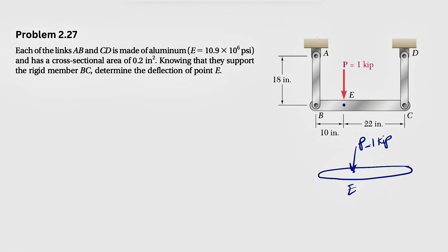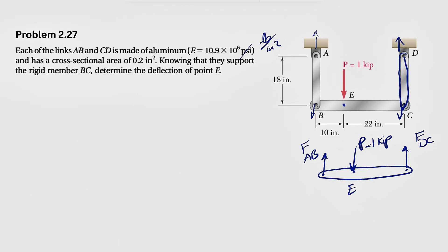We're going to start with the free body diagram of member BC. We have force P applied at point E, which is one kip. The two members AB and CD will be in tension. Therefore, the force from the members at joints B and C will be upward — we call them F_AB and F_DC. The elastic modulus is given in psi, so we work in pounds. One kip equals 1,000 pounds.